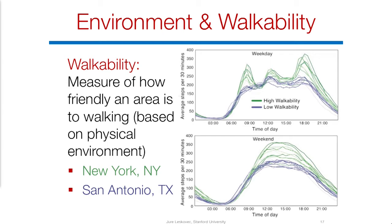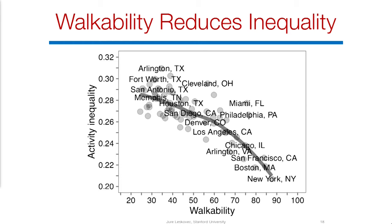During the work week there are three characteristic spikes: morning commute, lunchtime, and afternoon commute. In the least walkable cities, you basically don't see spikes for morning and afternoon commute, but people still walk to lunch, so there is a small bump at noon. There is also a strong correlation between the walkability of a city on the x-axis and activity inequality — more walkable cities have a more equal distribution of activity in the population.